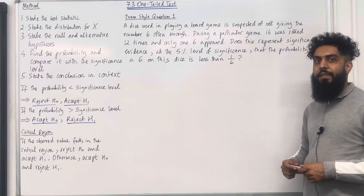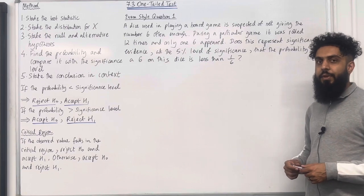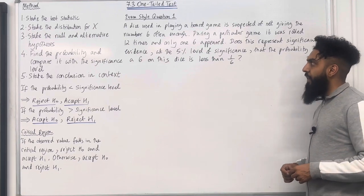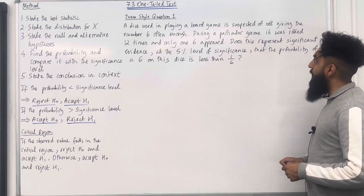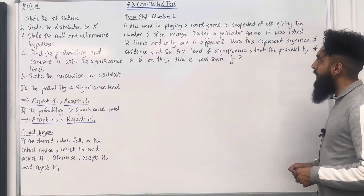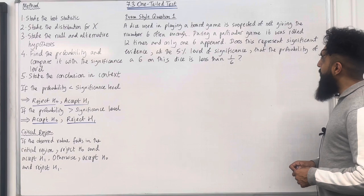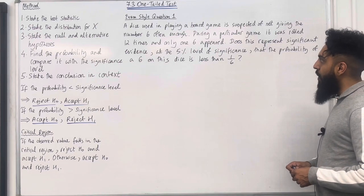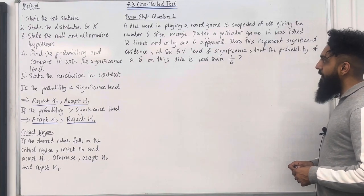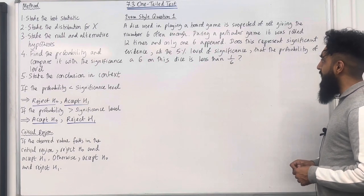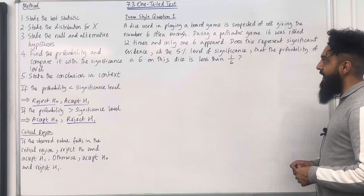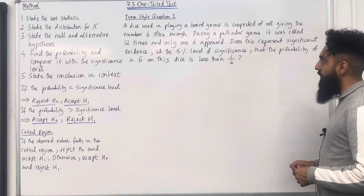I'm going to be implementing these key facts within exam-style questions. Here is exam-style question 1. A dice used in playing a board game is suspected of not giving the number 6 often enough. During a particular game, it was rolled 12 times and only one 6 appeared. Does this represent significant evidence at the 5% level of significance,